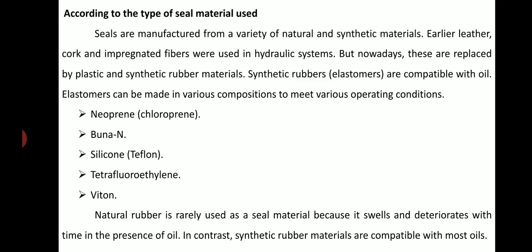Common seal materials include neoprene, chloroprene, Buna-N, silicone, Teflon, tetrafluoroethylene, and Viton. Natural rubber is rarely used as a seal material because it swells and deteriorates with time in the presence of oil. In contrast, synthetic rubber materials are compatible with most oils.